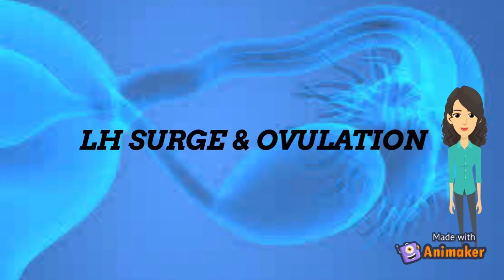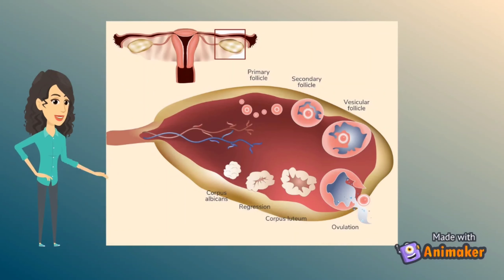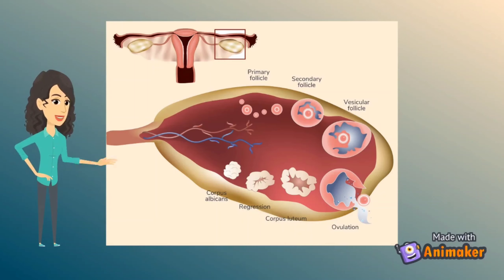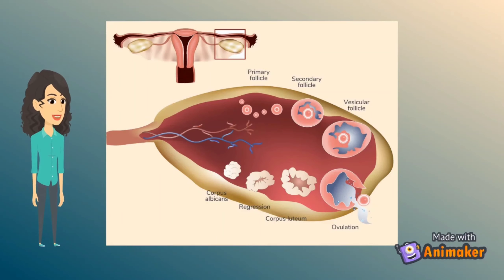As you can see in this diagram, the mature ovum is released from the ovary at the 14th day of the menstrual cycle.